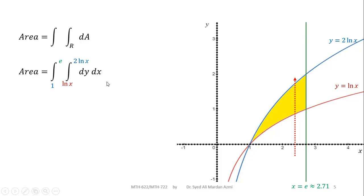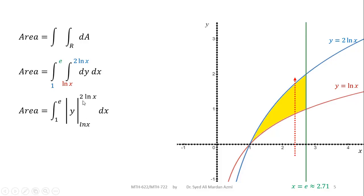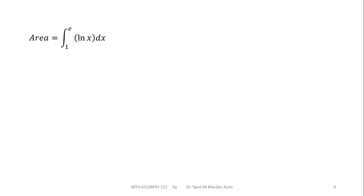After calculating these limits, we evaluate the integral. The integration of dy is y, evaluated from the lower limit natural log of x to the upper limit 2 natural log of x. Applying the fundamental theorem of calculus — upper limit minus lower limit — after simplification we get the integral of natural log of x from 1 to e.